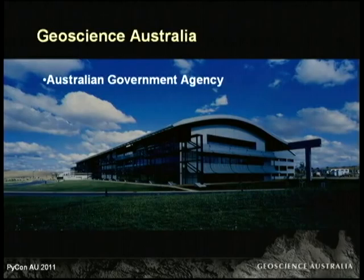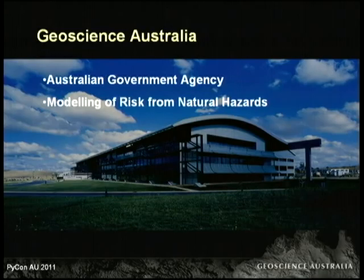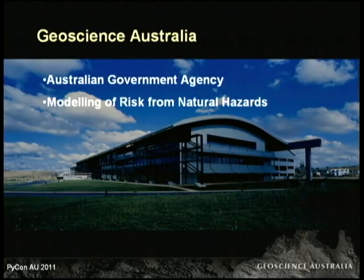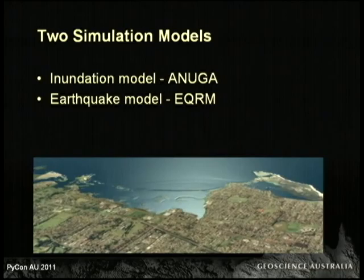I'll be talking about developing scientific software in Python. So what is Geoscience Australia? It's a government agency and we do a lot of things such as producing maps and doing pre-competitive mineral exploration. The area that I work in is modelling risks from natural hazards — things like inundation, storm surges, or looking at risk to Australia due to earthquakes. Two of the models I've worked on are an inundation model called ANUGA and also an earthquake model called ECRM.